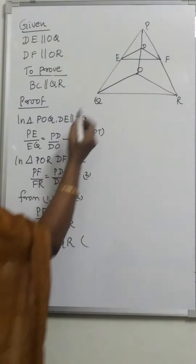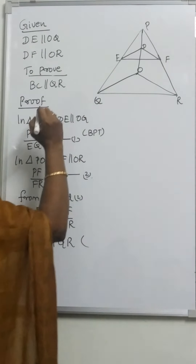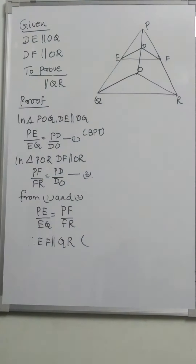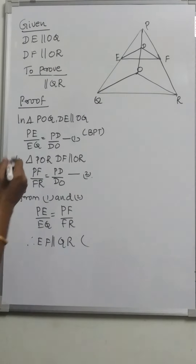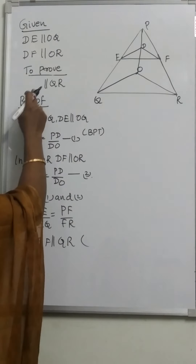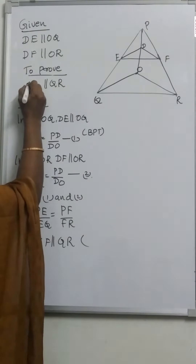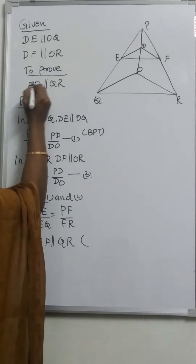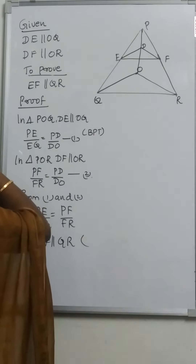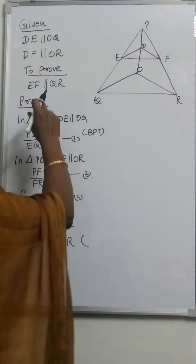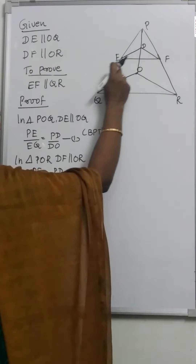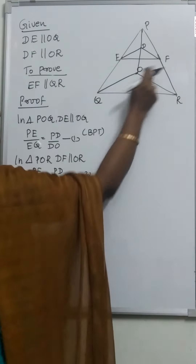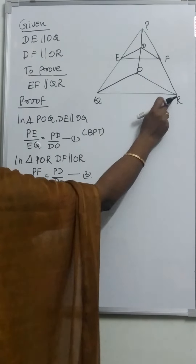We have to prove that EF is parallel to QR. First, in triangle POQ, DE is parallel to OQ. Therefore, PE by EQ is equal to PD by DO by the Basic Proportionality Theorem.